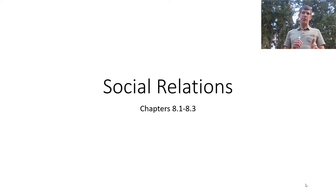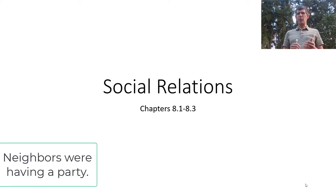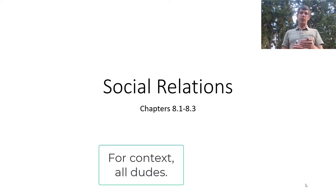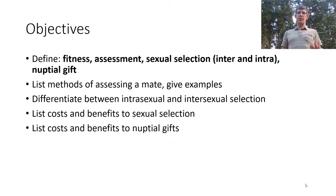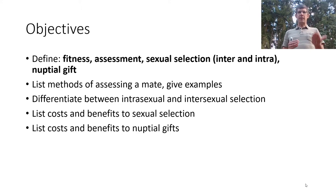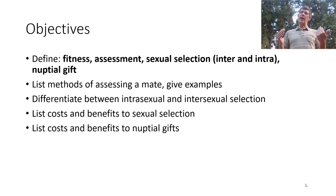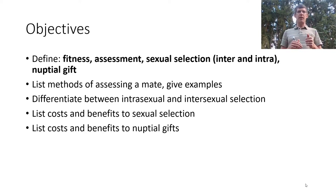Today we're going to talk about social relations, or more specifically, mating and how different sexes organize their resources for mating. By the end of this lecture, you should be able to define fitness, assessment, and sexual selection — both intersexual and intrasexual. You should also be able to define nuptial gift, list methods of assessing a mate with examples, differentiate between intrasexual and intersexual selection, and list the costs and benefits to sexual selection and nuptial gifts.